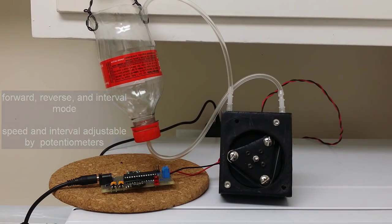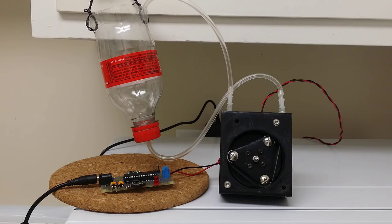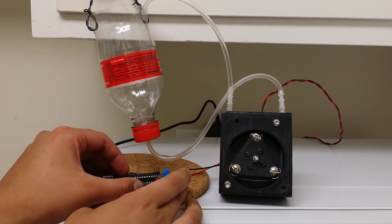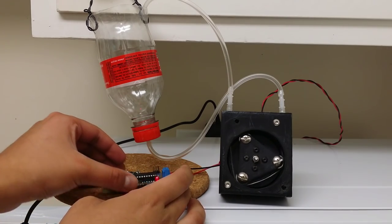These are potentiometers that control the speed and interval settings. You can see it's spinning both directions and then